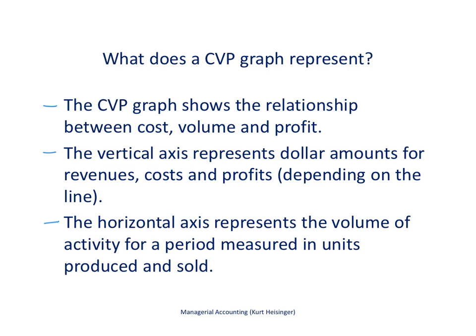The CVP graph on the next slide shows several things. It shows the relationship between cost, volume, and profit. The vertical axis, the y-axis, represents the dollar amounts for revenues, costs, and profits. The horizontal axis, the x-axis, shows the volume of activity for a period measured in units produced and sold.